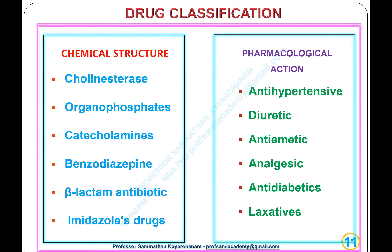Drug classification. The most common drug classifications are two types: 1. Classification based on chemical structure; 2. Classification based on pharmacological action. Examples of chemical drug classification: cholinesterase, organophosphates, catecholamines, benzodiazepines, beta-lactam antibiotics, and imidazole drugs. Examples of pharmacological drug classification: antihypertensives, diuretics, antiemetics, analgesics, antidiabetics, and laxatives.